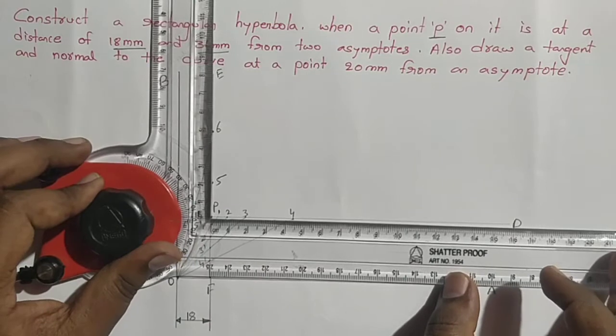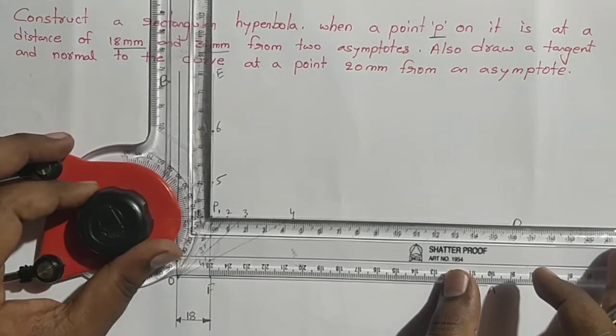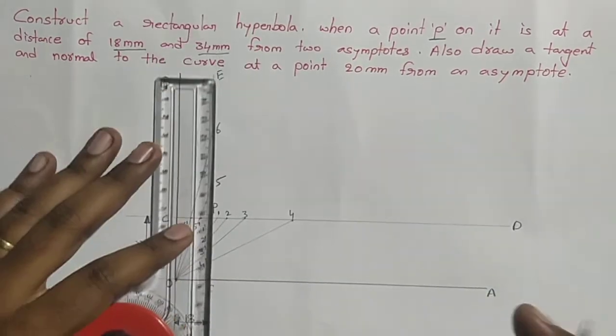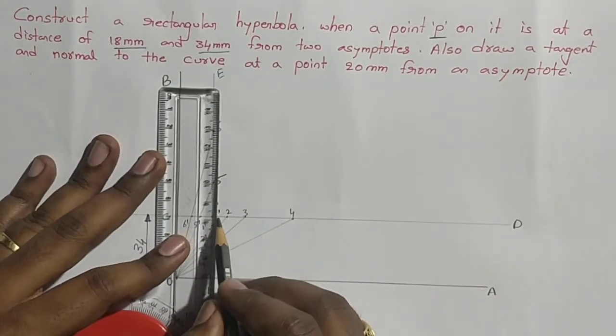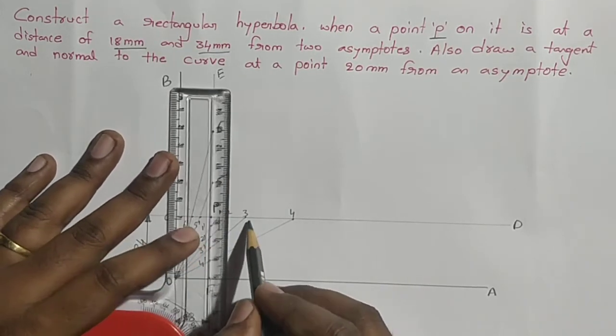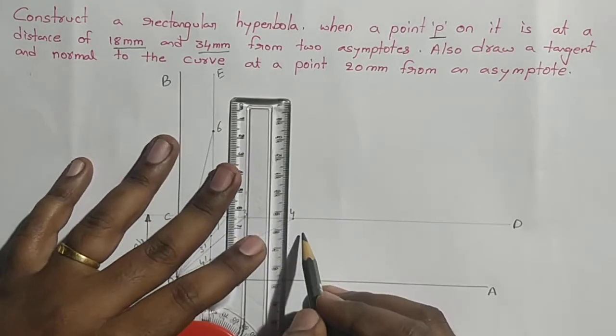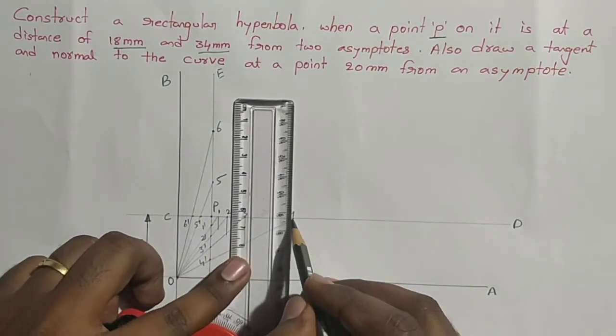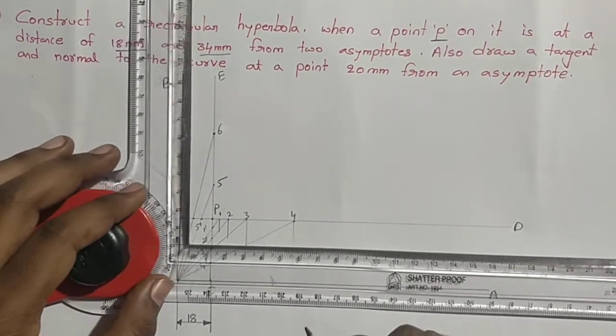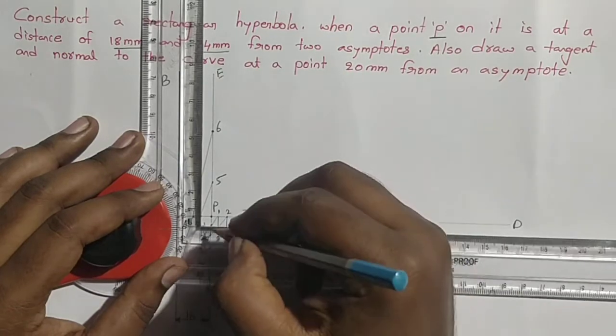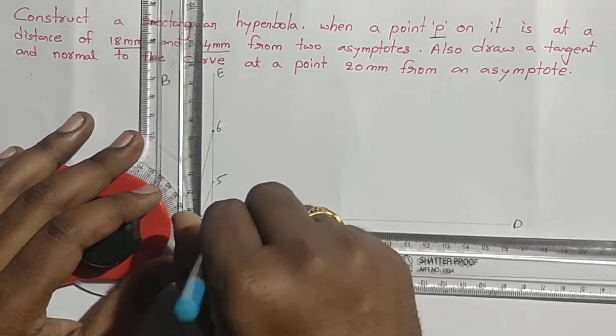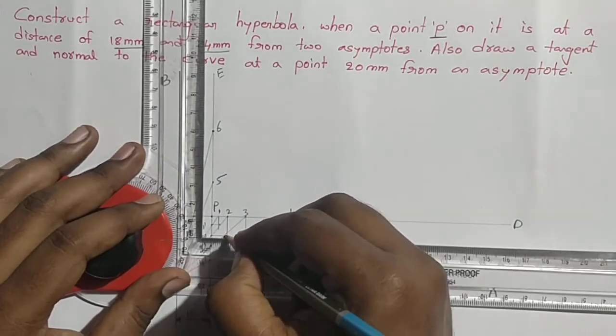The horizontal and vertical scales coincide with the two asymptotes. We need to draw the vertical line from 1, 2, 3, 4. Similarly, draw the horizontal lines that are parallel to OA from 1 dash.